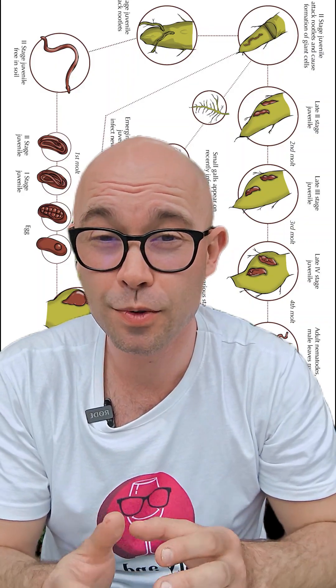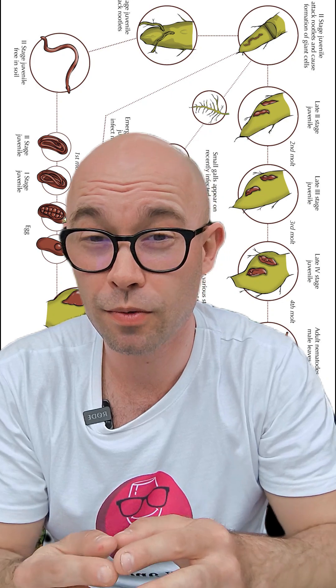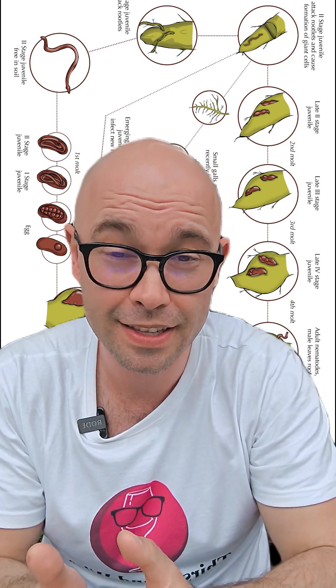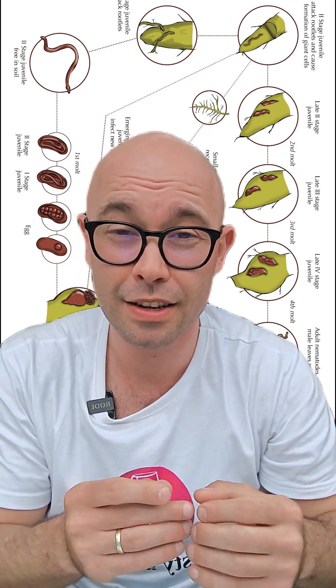Nematodes are microscopic worms that attack the root system of vines in a similar way that phylloxera does. This interferes with the uptake of water and nutrients that the vine needs, and nematodes can also transmit viruses and diseases to the vine plant. The best solution is prevention: sanitizing the soil against nematodes and using resistant rootstock.